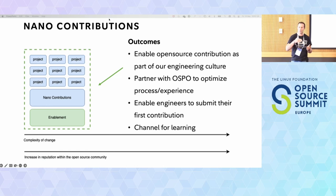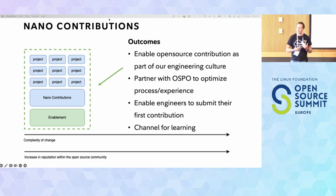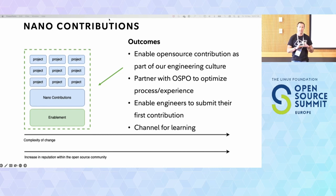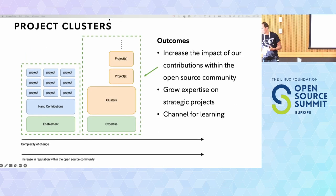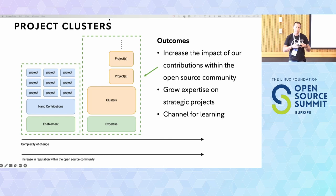The first part of our strategy is what we call nano contributions. Nano contributions mirrors the pilot phase - it's small changes, about engaging our developer community to get them onto their first contributions in the open source community, understanding the friction at a larger scale than our pilot, working with our open source program office, and ultimately a channel of learning for our engineers. It's about enablement.